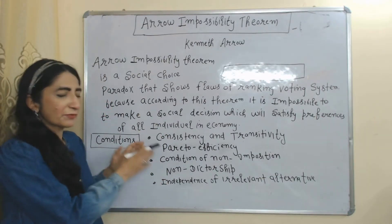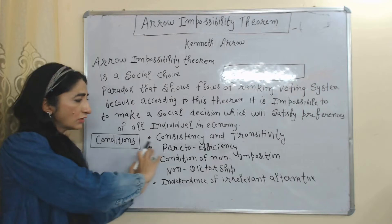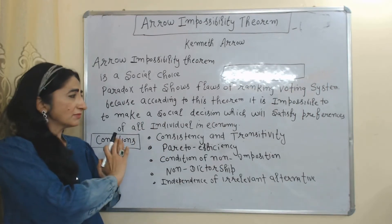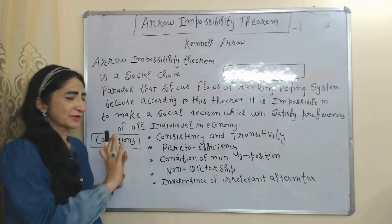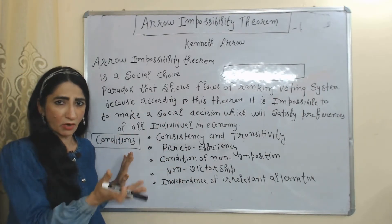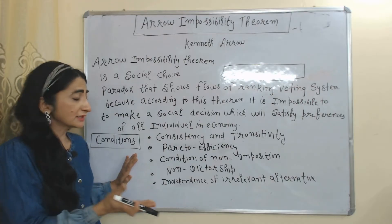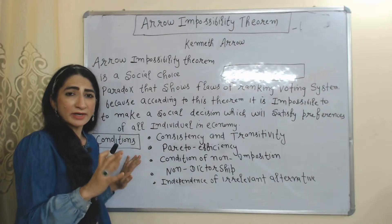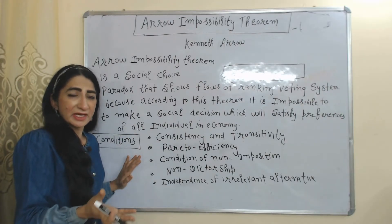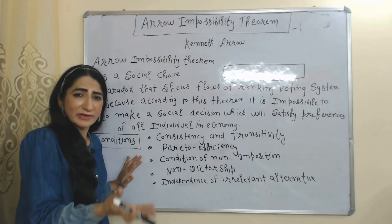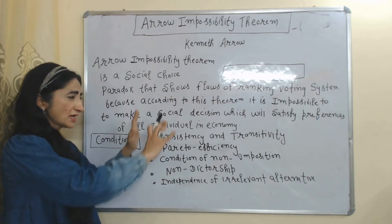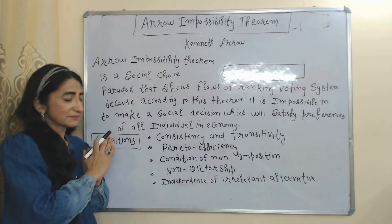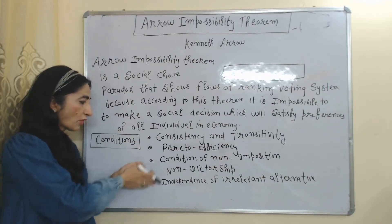In order to make a valid social decision, Arrow talks about five conditions. If all five conditions are satisfied, we can make a social decision which satisfies preferences of all individuals. But in reality, it is not possible to satisfy all these conditions — at least one condition will be violated, meaning we cannot make a valid social decision.